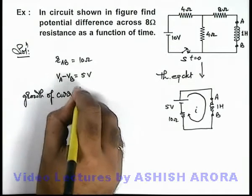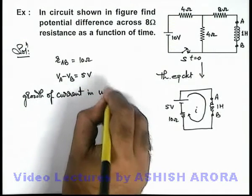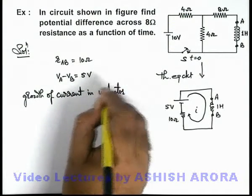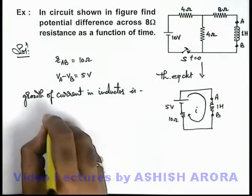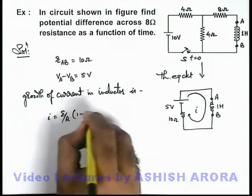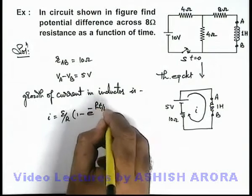This can be written as i = E/R (1 - e^(-Rt/L)).